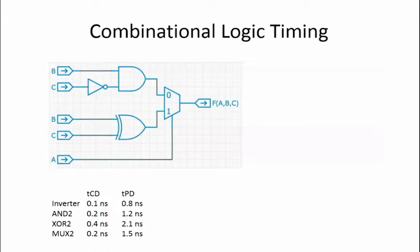We are then asked to determine the contamination delay and propagation delay for the entire circuit. The propagation delay of a circuit is defined as the longest delay that can occur from when the inputs change to when the output becomes stable. In order to calculate the propagation delay of a circuit, we need to identify the path from input to output whose sum of the propagation delays is the largest.